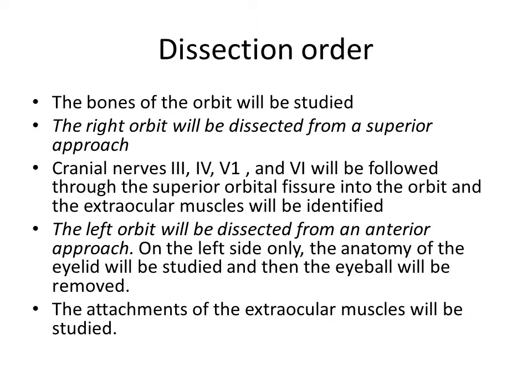The left orbit we will do slightly differently. Here we will use a so-called anterior approach and we will also study the anatomy of the eyelid and remove the eyeball. And then we will also from an anterior approach study the attachment sites of the extraocular muscles.